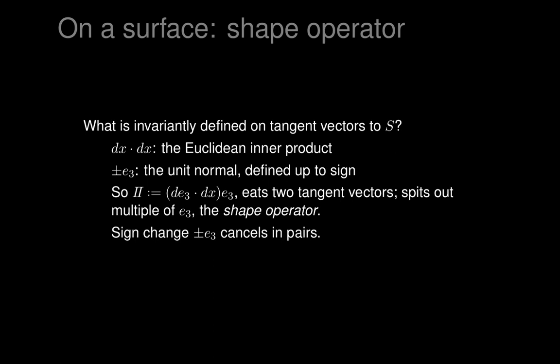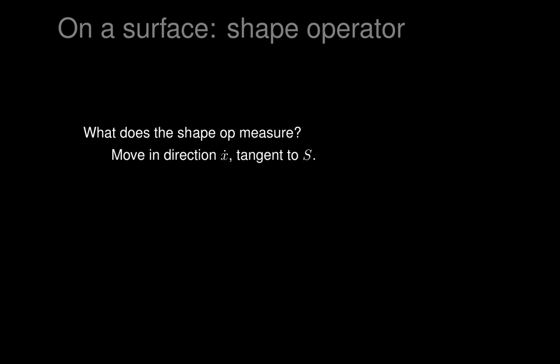That's a well-defined expression, but what does it mean geometrically? This is a very quick introduction to surface theory using the theory of differential forms, but it gives us something we can clearly write down that's invariantly defined for tangent vectors to a surface. It's the simplest thing we can write down besides the Euclidean inner product itself - the shape operator. So now we want to think about what it means and how we can picture it.